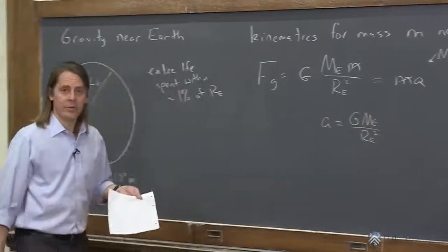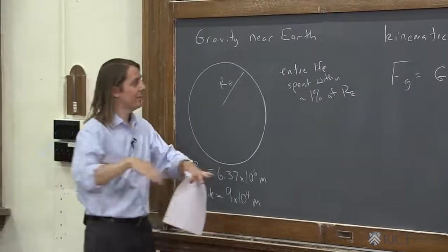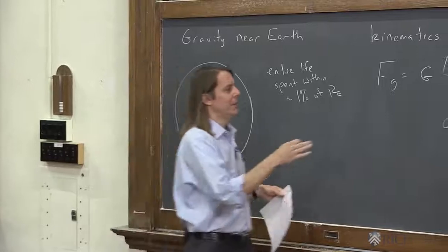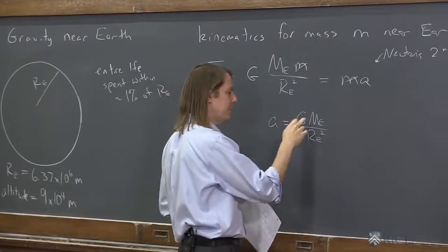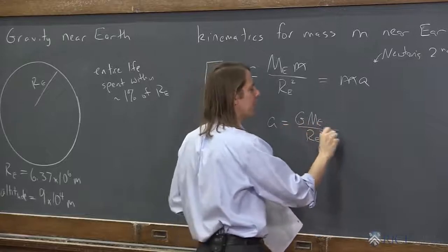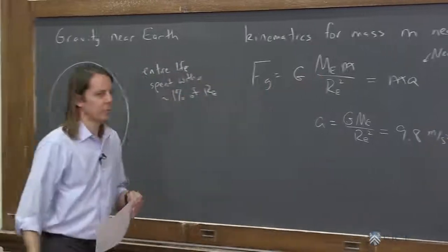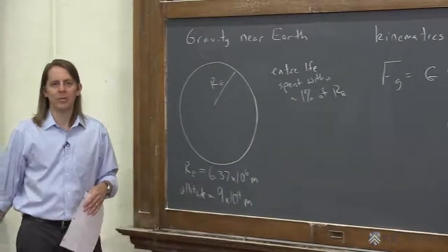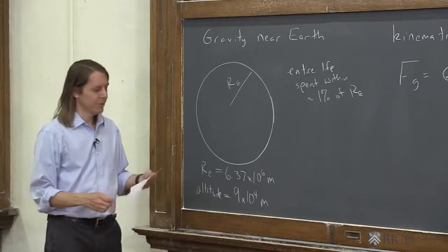Those are all constants. So just like we say near the surface of the Earth, the acceleration of gravity is constant, it's always some number. And if you plug in the constants here of G, the gravitational constant, mass of the Earth, radius of the Earth, indeed you get 9.8 meters per second squared. That's where that number comes from in some sense. How big the Earth is, how far we are from the center, and how massive it is.